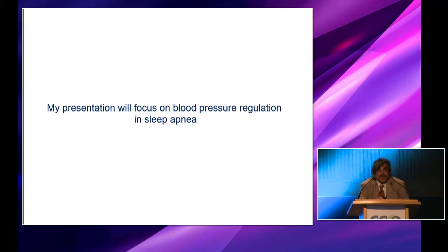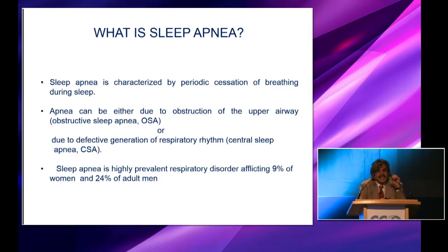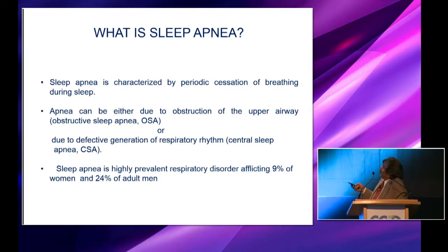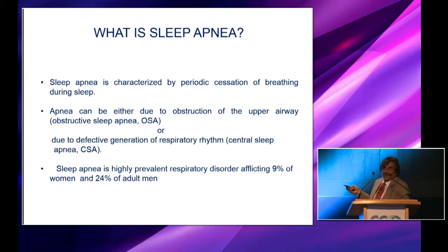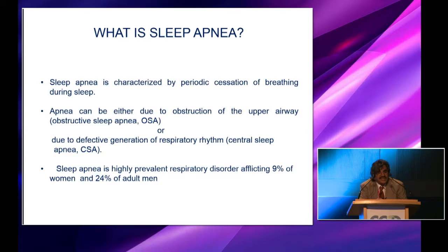What I'm going to talk about today is blood pressure regulation in sleep apnea. Sleep apnea is a respiratory disease characterized by periodic cessation of breathing during sleep. This apnea can be due to obstruction of the upper airway, or it could be defective rhythm generation by the central respiratory neurons, which is called central apnea. It is not a trivial disease — recent studies show as much as 10% of the adult population are prone to sleep apnea syndrome.